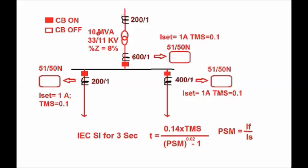In this figure we have a 10 MVA, 33/11 kV distribution type transformer. The 33 kV side is delta connected, the 11 kV side is star connected, and the percentage impedance is 8%. The 11 kV incoming is connected to the 11 kV bus, and from the 11 kV bus we have two feeders. Feeder A has a CT ratio of 200/1 and Feeder B has a CT ratio of 400/1.